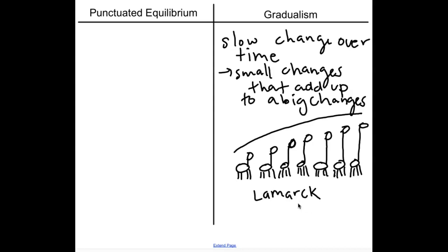This is called gradualism and it's very similar to what Lamarck was saying, which we now know is not super accurate. We know that if an organism tried to stretch their neck out, that wouldn't necessarily be passed on to their child, because only genetic traits are passed on — not acquired traits from within a lifetime. So a giraffe stretching its neck would not produce a baby with a longer neck. It would happen from genetic mutations.